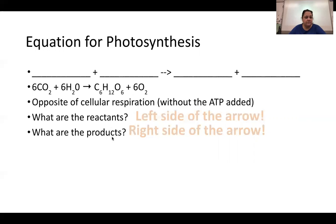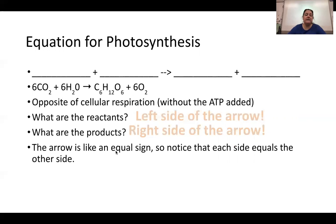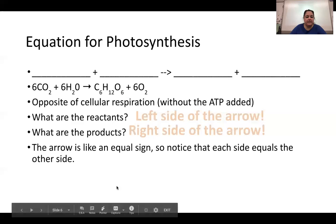Remember, that arrow is like an equal sign — each side equals the other. So if you can't remember the equation, you can verify it: six carbons on the left side equal six carbons on the right side, and so on.